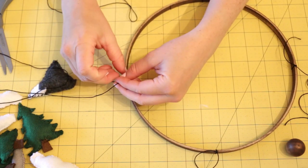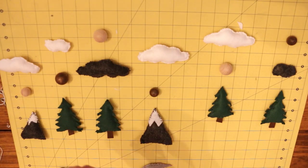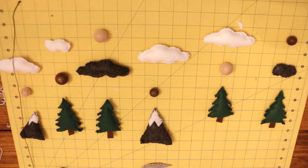Next, I planned out my hanging pieces and arranged them how I liked them. I made sure that the clouds were near the top while the trees and the mountains were near the bottom.